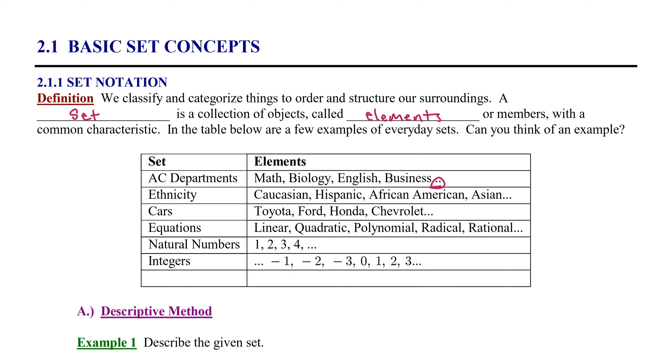Another example set that we use to order and structure our world is ethnicity. Some sample elements would be Caucasian, Hispanic, African American, Asian, and again there's other members to that set. The set of all cars might include Toyota, Ford, Honda, Chevrolet, so on and so forth.